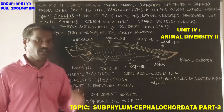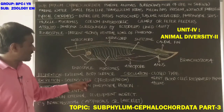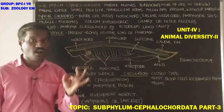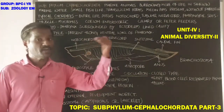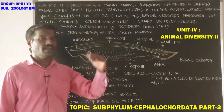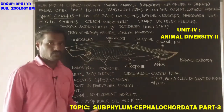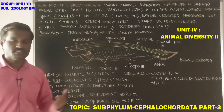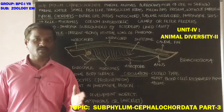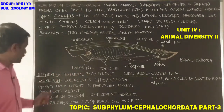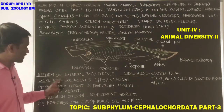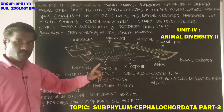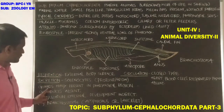Excretion is by solenocytes, which are protonephridian-type cells — tubular structures that lack internal openings and open to the outside. Their main function is maintaining salt and water balance in the body.